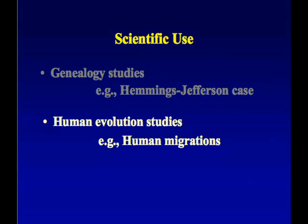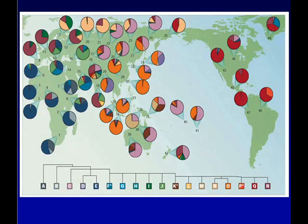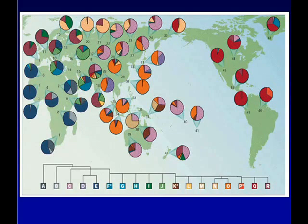Another application is evolution studies. Human migrations have been studied based on the Y chromosome, as well as mitochondria and other markers, because the lack of recombination gives us a record of human evolution on the Y chromosome. This work from Peter Underhill used Y-SNPs to define haplogroups on the Y chromosome. There are 10 major Y haplogroups, and different SNPs allow you to identify which haplogroup an individual belongs to. You can see quite a difference between Native Americans in North America versus Africans, with West Africans different from East Africans, and Europeans having different haplogroup distributions, helping us understand migrations going back thousands of years.